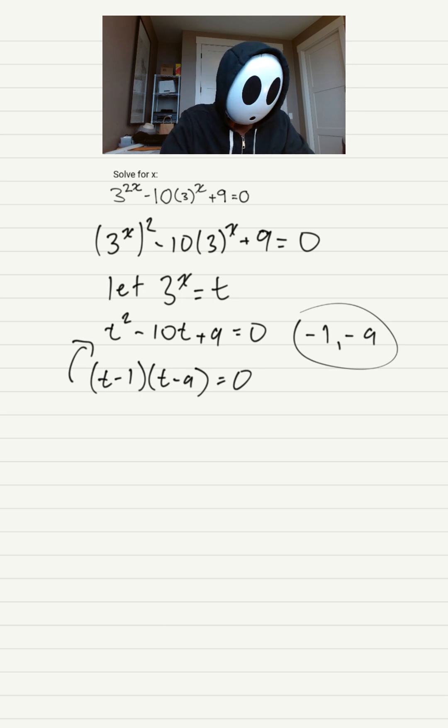Now, using the zero method, we solve for t that will result in 0 on the right side there. So t will equal positive 1 and 9.